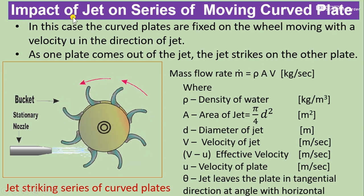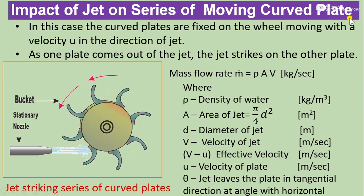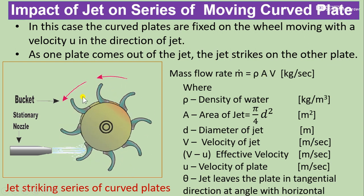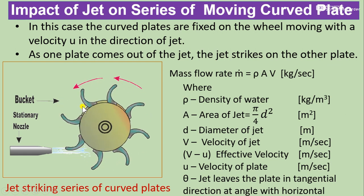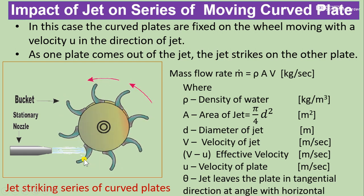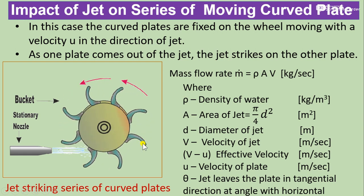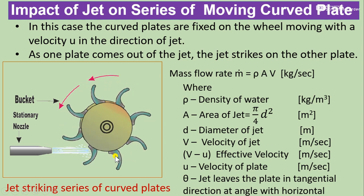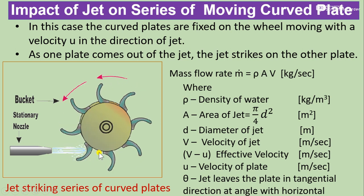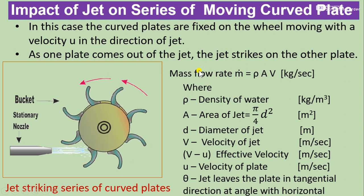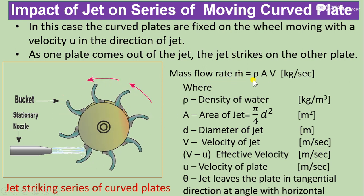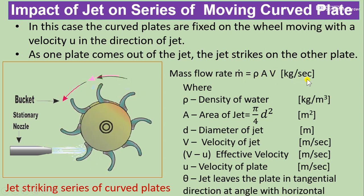Let us see the impact of a jet on a series of moving curved plates. In this case the curved plates are fixed on a wheel which is moving with velocity u in the direction of the jet. So as one plate comes out of the jet, the jet strikes the other plate.